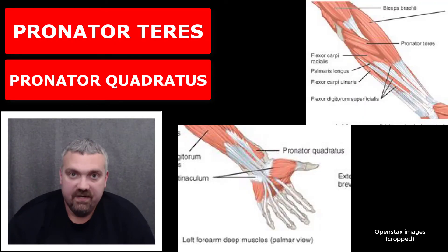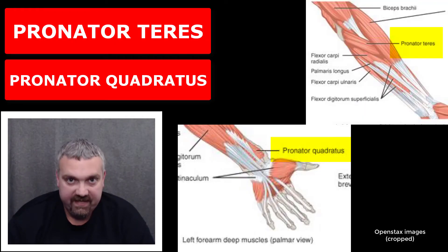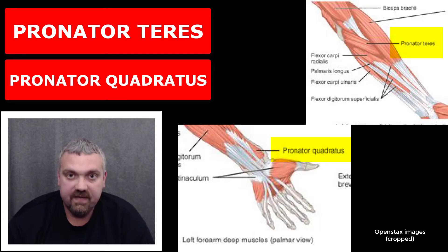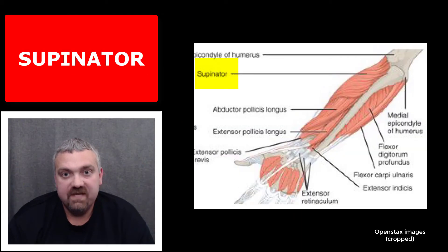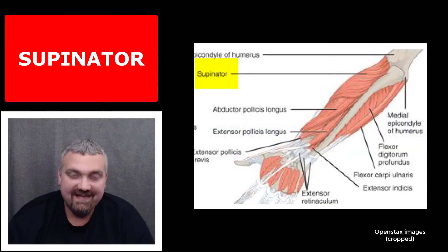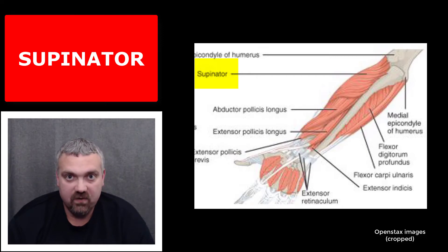The pronator muscles include the pronator teres and the pronator quadratus — both forearm muscles whose job is to pronate. Then you have the supinator muscle that, like the name implies, supinates the forearm.